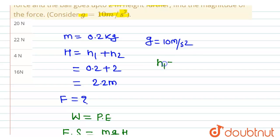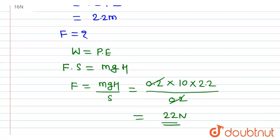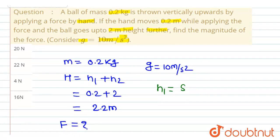So h1 is nothing but displacement which is 0.2. This 0.2 and 0.2 will get cancelled and 10 into 2.2 will be 22 newton. Therefore the value of force applied by the hand is 22 newton.